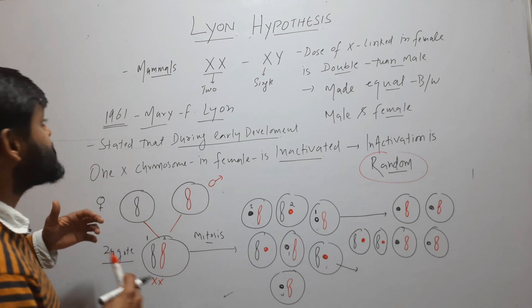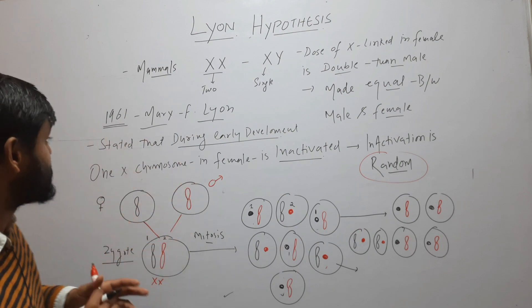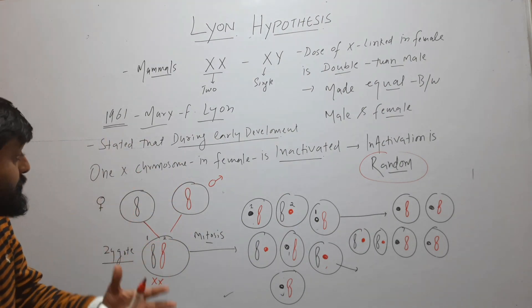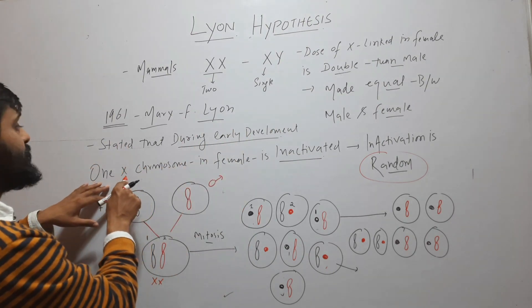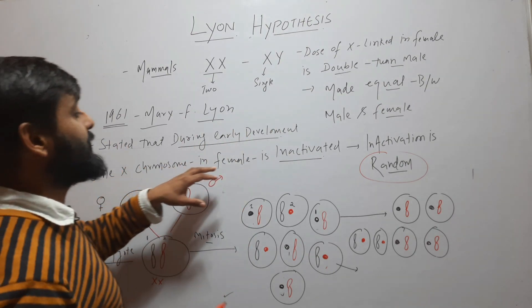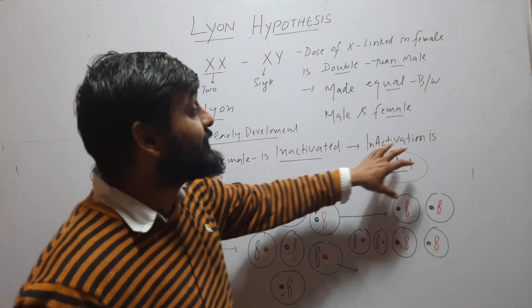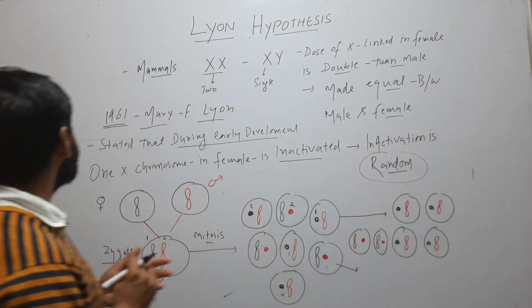So this is the Lyon hypothesis. This hypothesis is called the Lyon hypothesis, which says that during early development, one X chromosome in females is inactivated, and this inactivation is random.